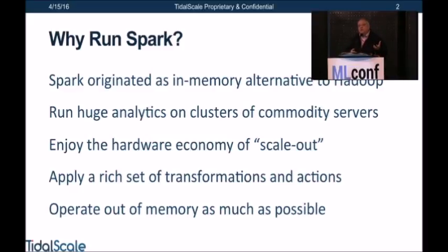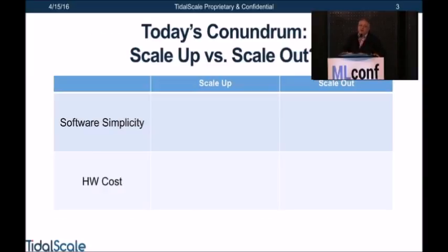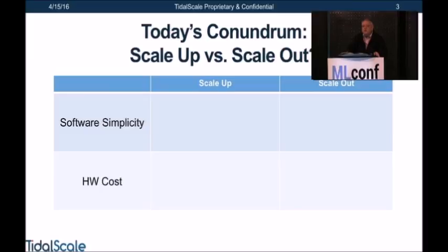We want to operate out of memory as much as possible because memory is fast. The conundrum I've seen — I was the chief scientist at SAP and did a number of startups before that, I flunked retirement three times — is that people tailor their applications to their computing environment. We think that's backwards. We want to tailor the computing environment to the needs of the application. Eventually people run out of capacity and face this conundrum for enterprise software.